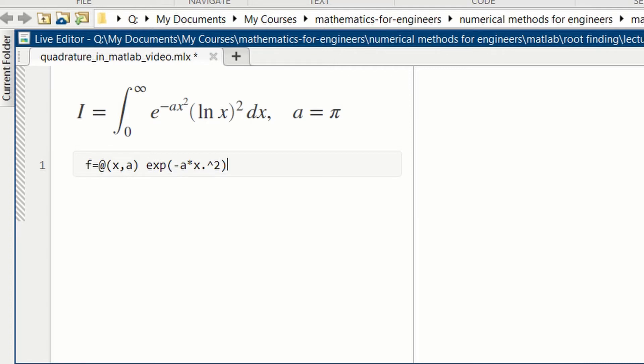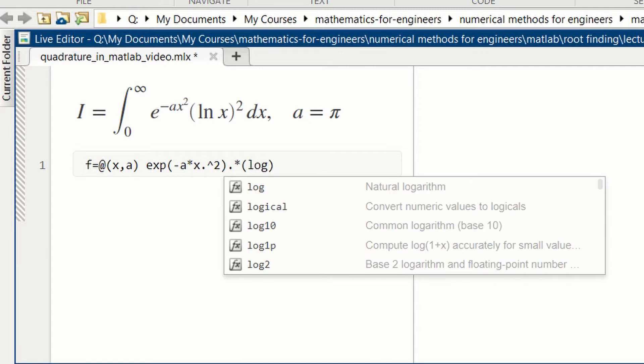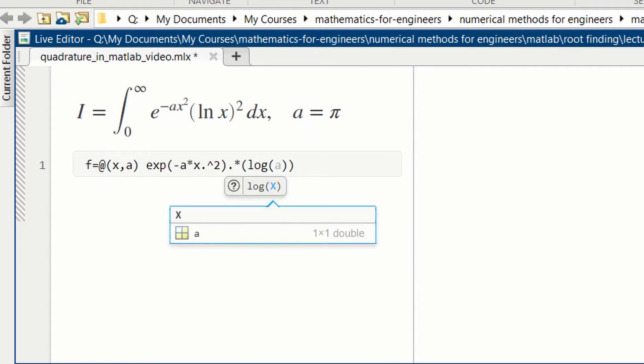And then we're going to multiply that, which could be a vector, so dot star, times the log. Natural logarithm in MATLAB is log. The log of x, and then the log of x is going to be squared, so dot hat squared. And that should define our integrand.